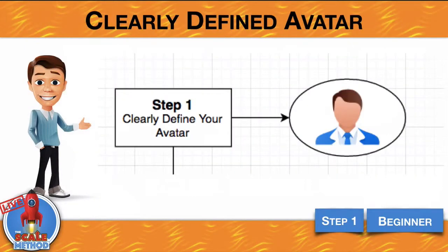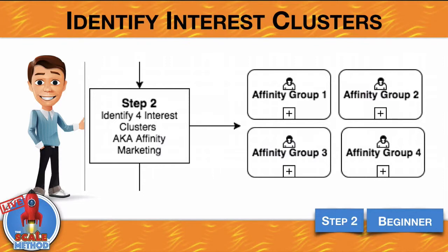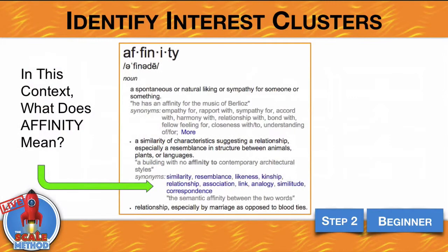The very first step is to focus on who is our ideal buyer — figure out age, demographic, and really who that person is. When we write ads, emails, and marketing directly to that person, our conversions will be much higher. Once we identify who we want to market to — who that perfect avatar is — we start to identify interest clusters. We call this affinity marketing: who else may like your products and services? Affinity means similarity, resemblance, likeness, kinship, relationship, association, and so on.